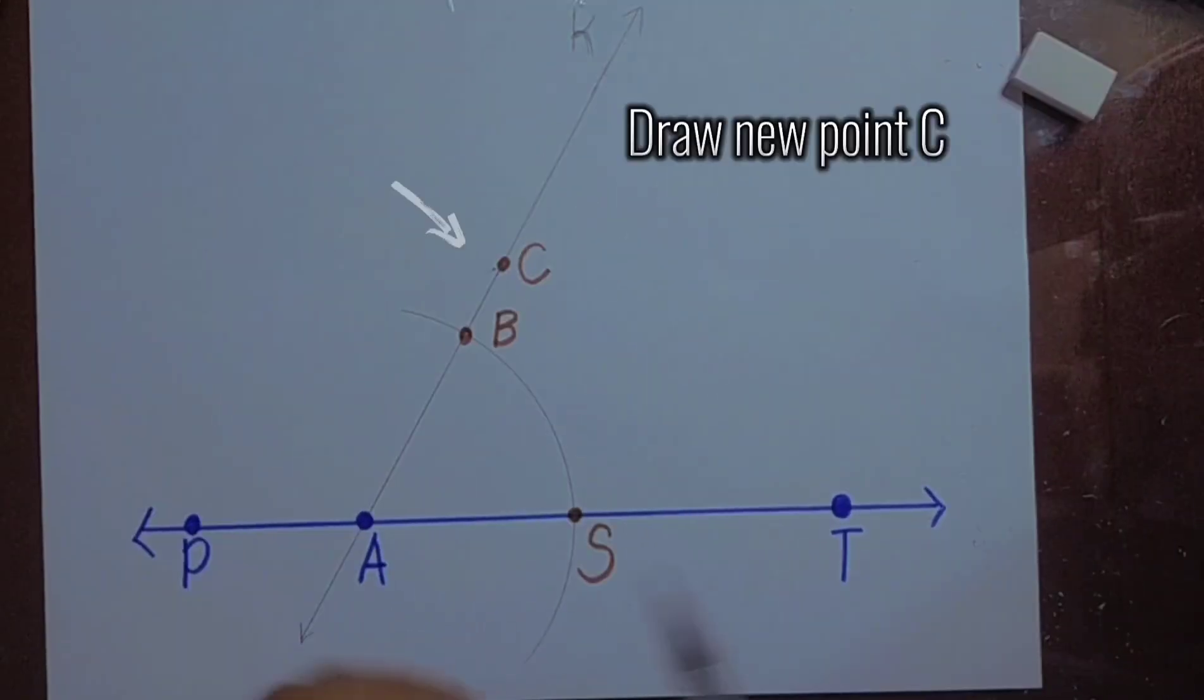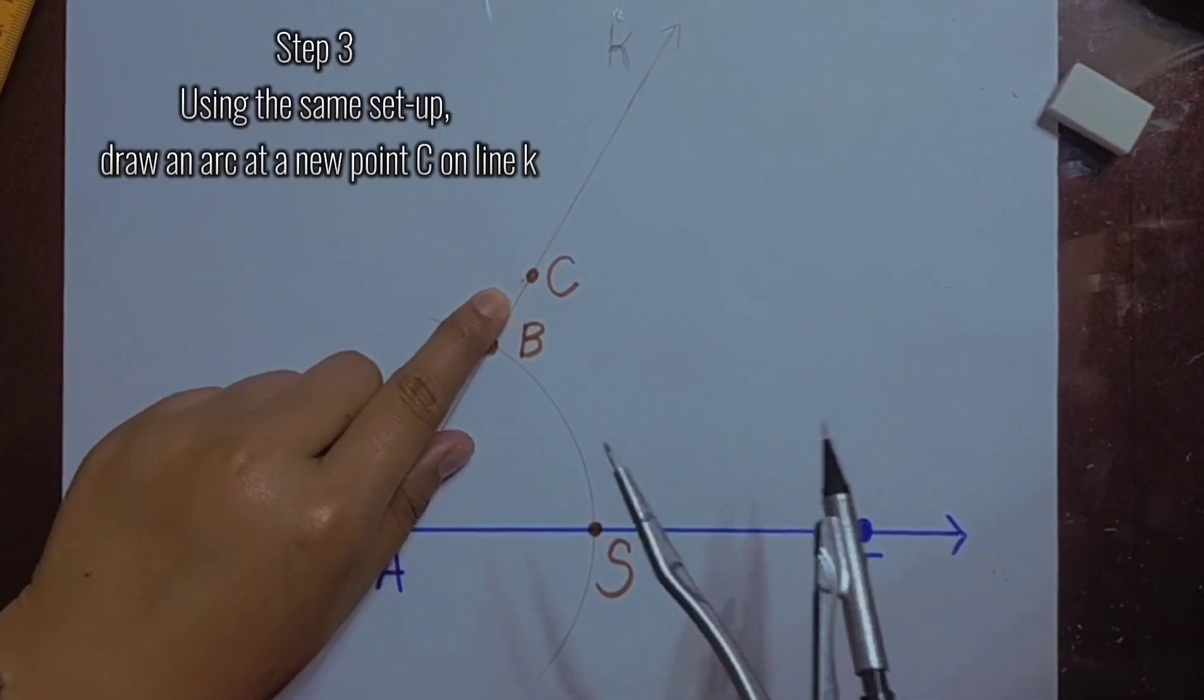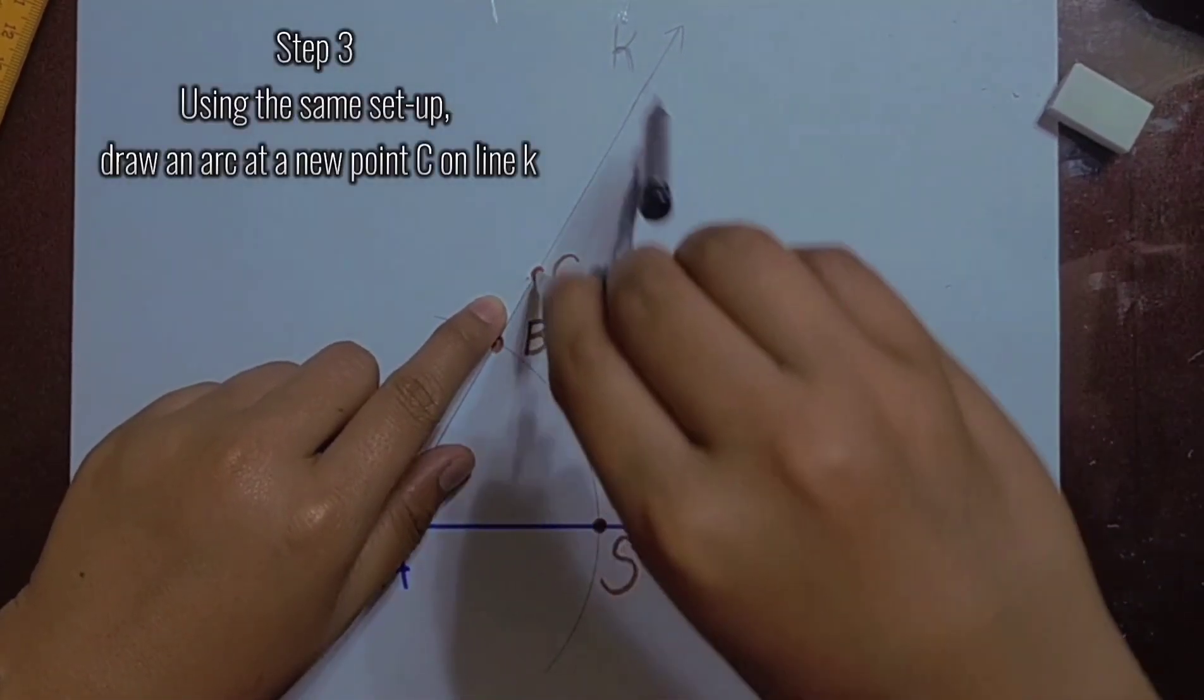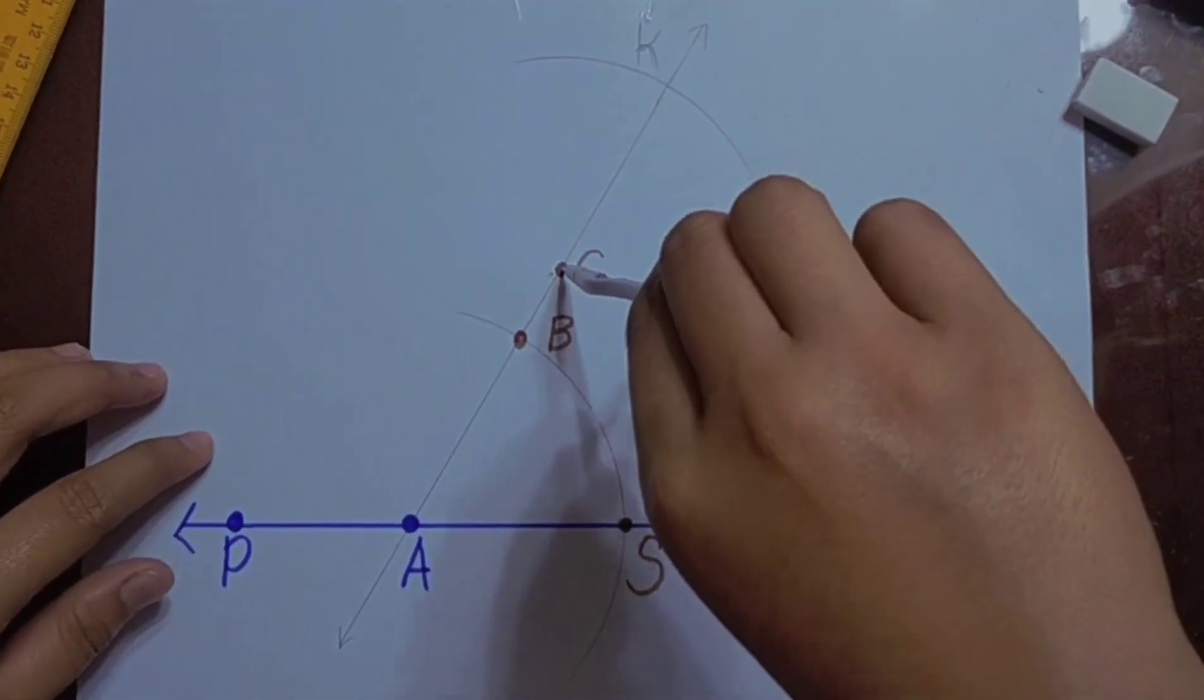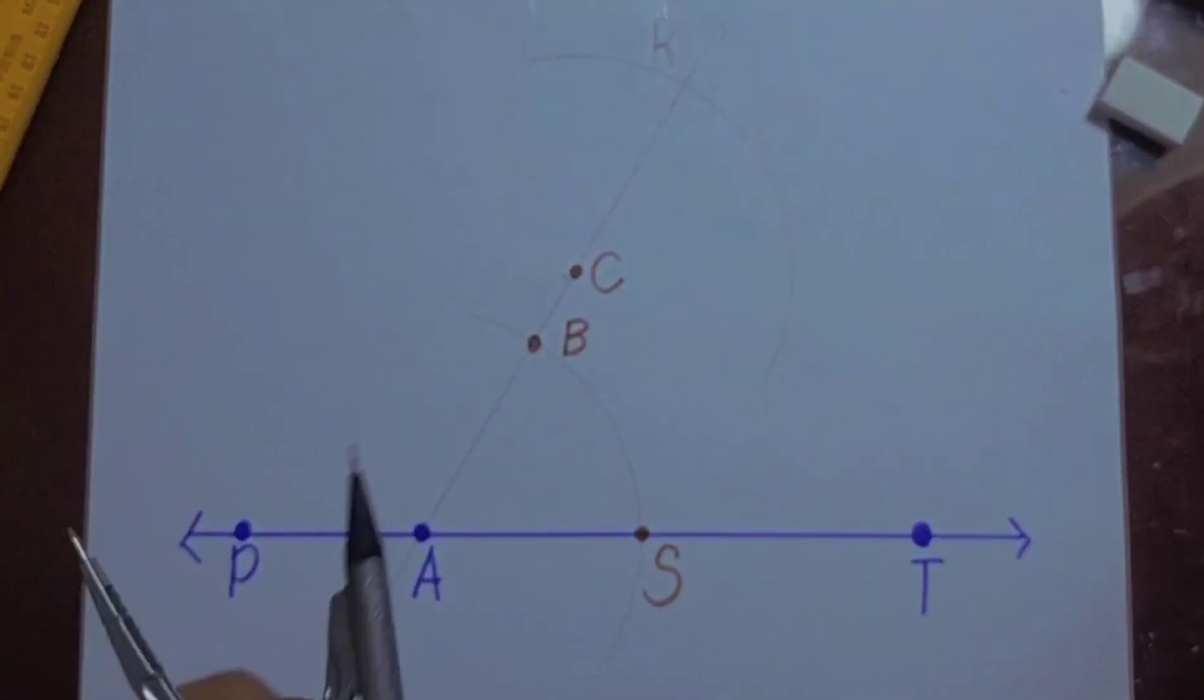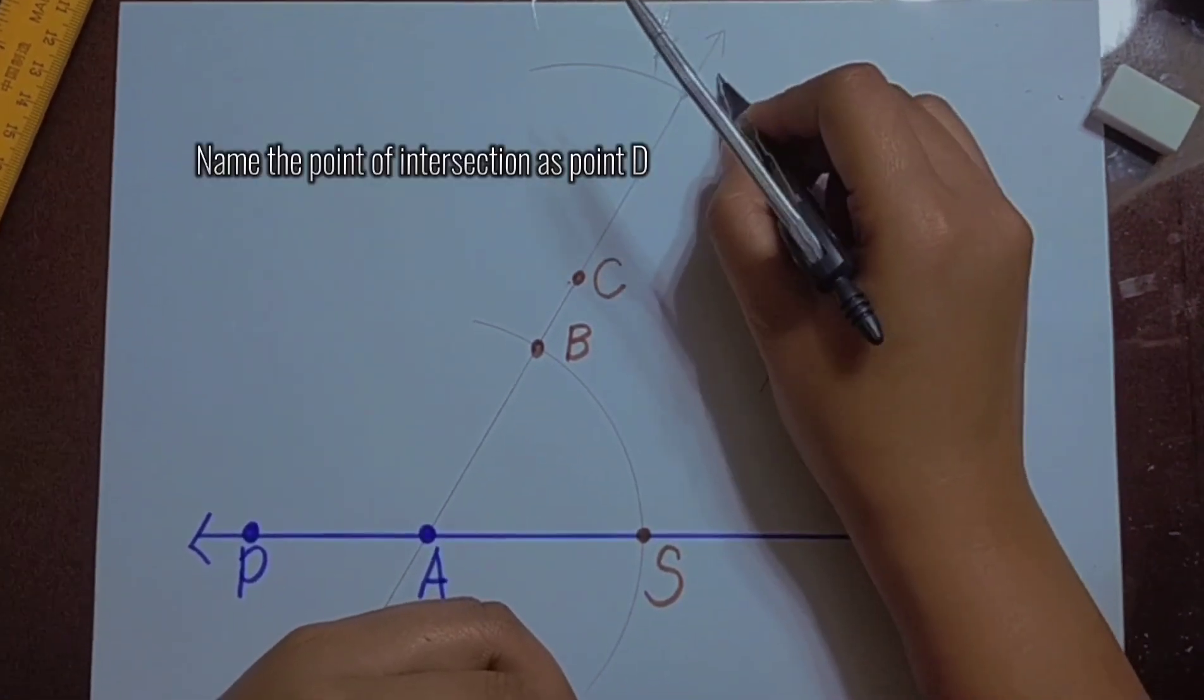Draw new point C. Step 3: Using the same setup, draw an arc at a new point C on line K. Name the point of intersection as point D.